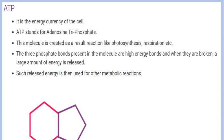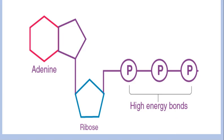Looking at the chemical structure of ATP: this part is adenosine, this is ribose, and these three phosphate molecules are connected by high energy bonds.